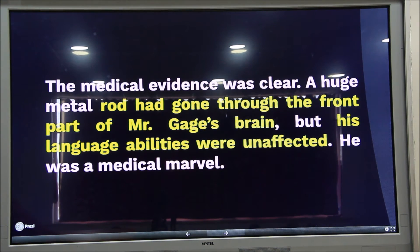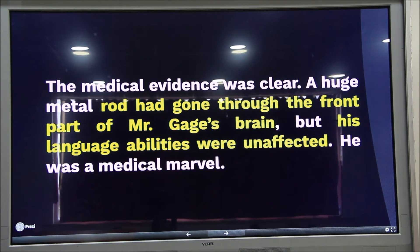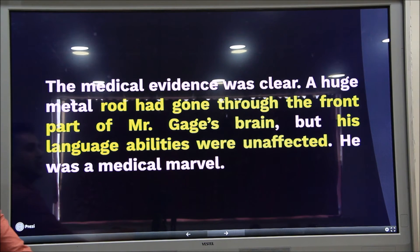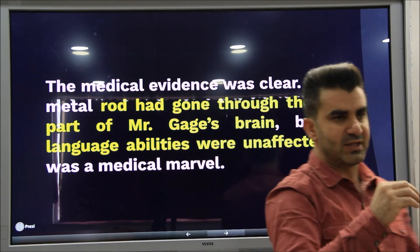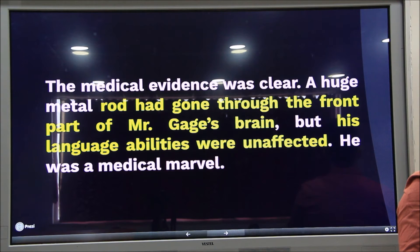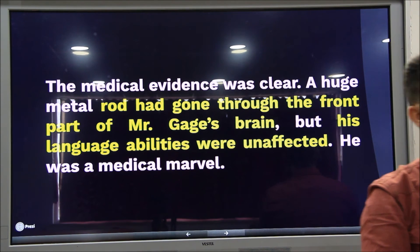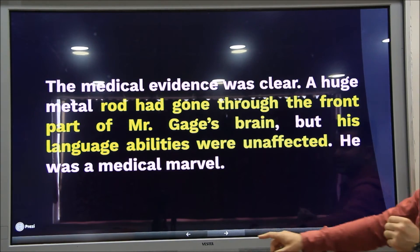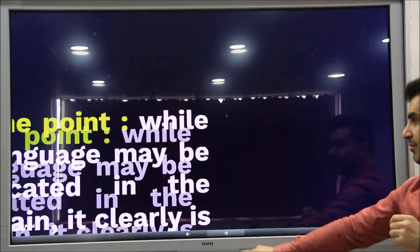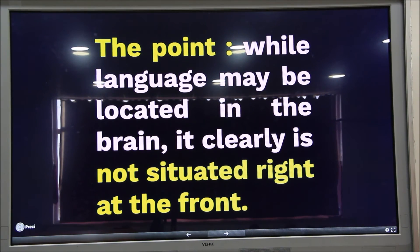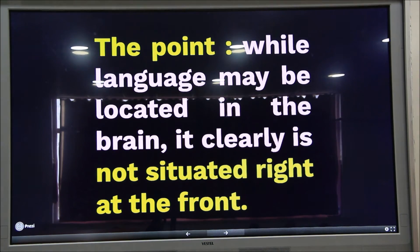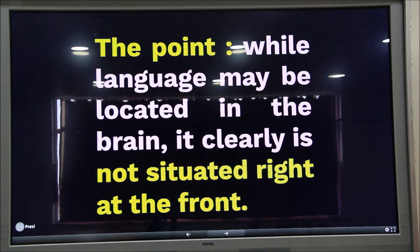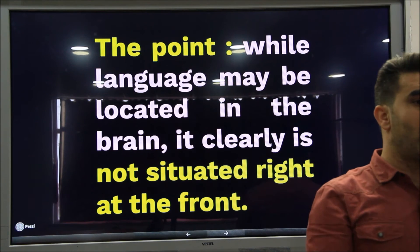The medical evidence was clear. A huge metal rod had gone through the front part of Mr. Gage's brain, but his language abilities were unaffected. He was a medical marvel. Even though the front part of his brain was damaged, his speaking abilities weren't affected. So, what does this show? The point is here. Though language may be located in the brain, it is clearly not situated right at the front.